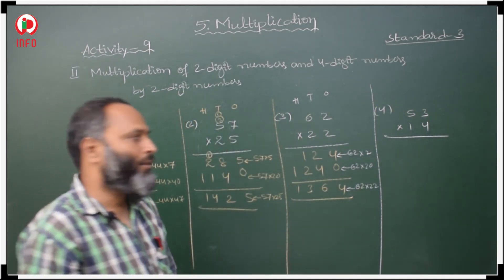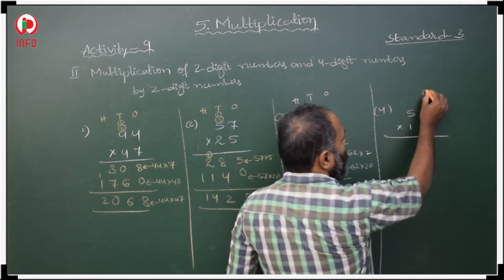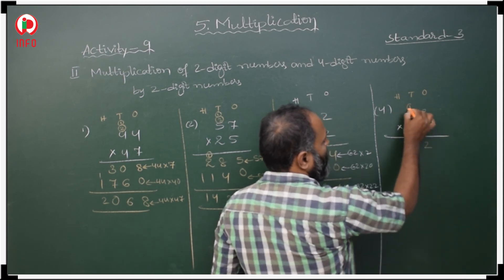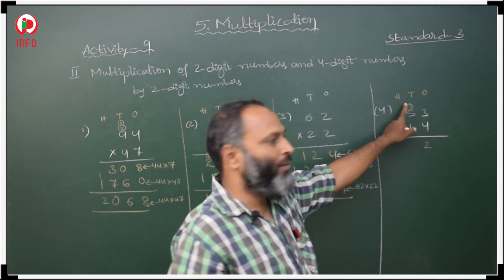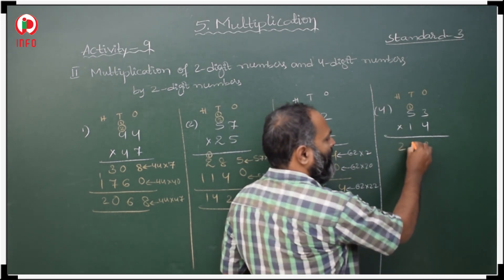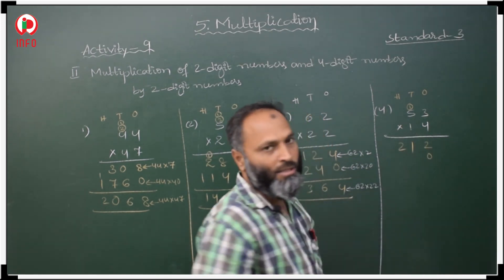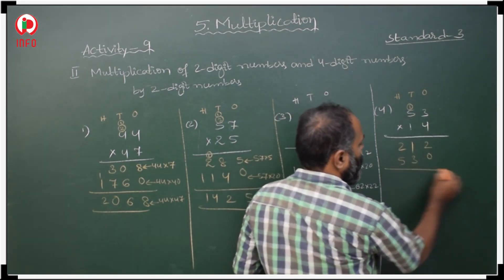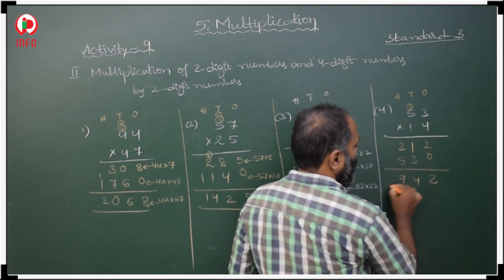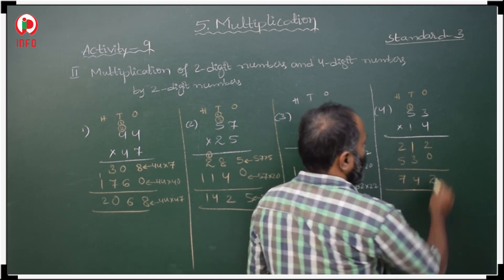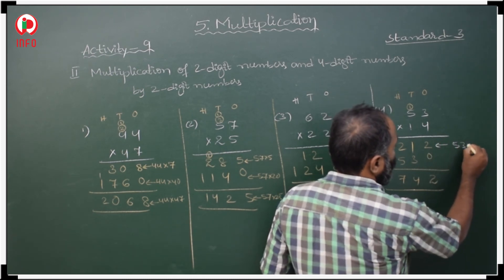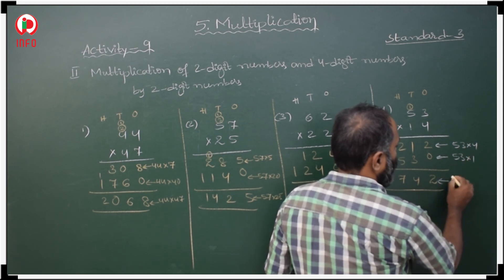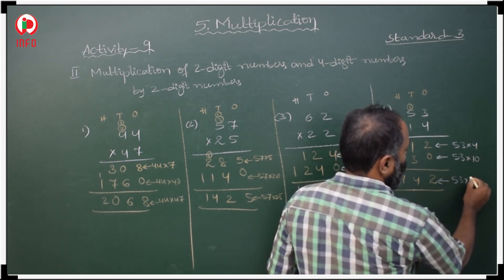Now with 4: ones, tens, hundreds. 4 threes are 12, write 2 ones carry 1 ten. 4 fives are 20, 20 plus 1 is 21. Now with 1 in tens place, keep 0 first. 1 threes are 3, 1 fives are 5. Adding gives 2, 4, 7. This is the product of 53 with 4, and the product of 53 with 10, giving 53 with 14.